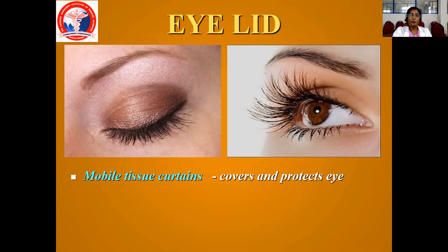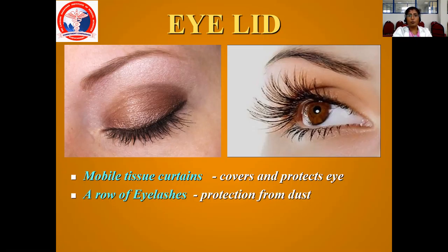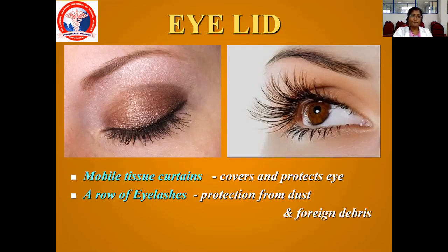What are eyelids? Usually these are mobile tissue curtains which cover and protect your eyes. You should have the eyelids, otherwise it will lead to dryness. We also have a row of lashes, which protects from dust particles — all dust particles are prevented from entering the eye. We also have diseases with the lashes, which involves loss of lashes, which usually happens in vitiligo and Hansen's disease, or an extra row of lashes, or lashes which are going and pinching on the eyelids, thereby producing abrasions. It also protects from foreign bodies entering the eye.